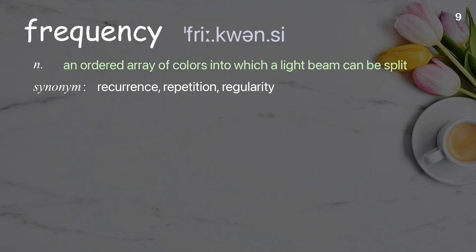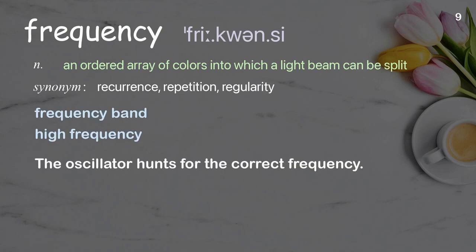Frequency: an ordered array of colors into which a light beam can be split. Examples: frequency band, high frequency. The oscillator hunts for the correct frequency.